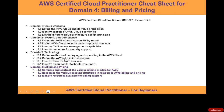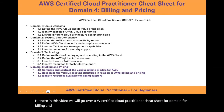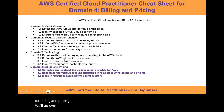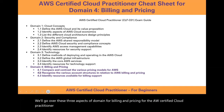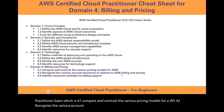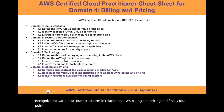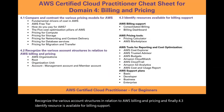In this video we will go over the AWS Certified Cloud Practitioner cheat sheet for Domain 4: Billing and Pricing. We will cover three aspects: 4.1 Compare and contrast the various pricing models for AWS, 4.2 Recognize the various account structures in relation to AWS billing and pricing, and 4.3 Identify resources available for billing support.